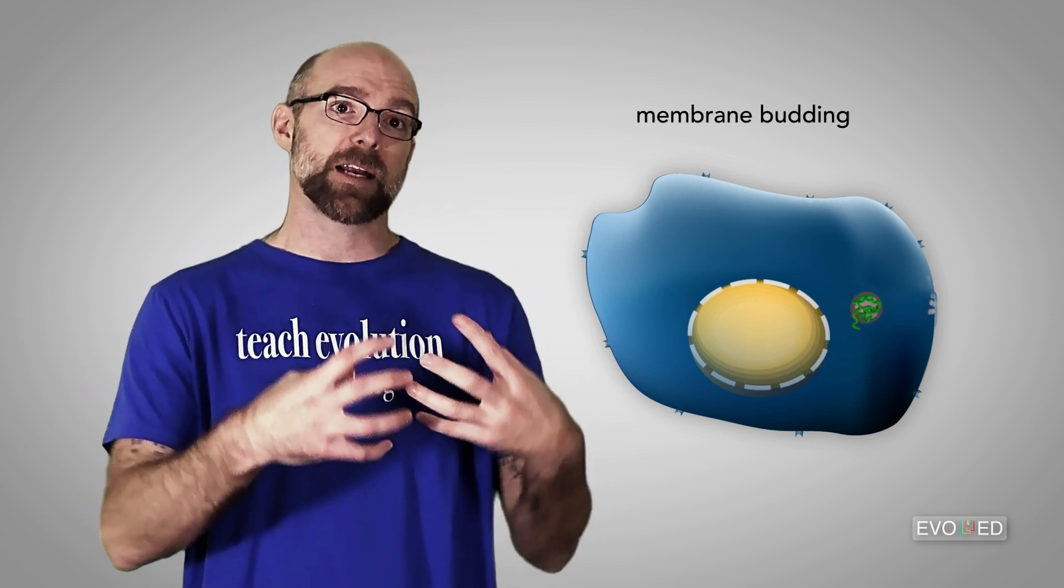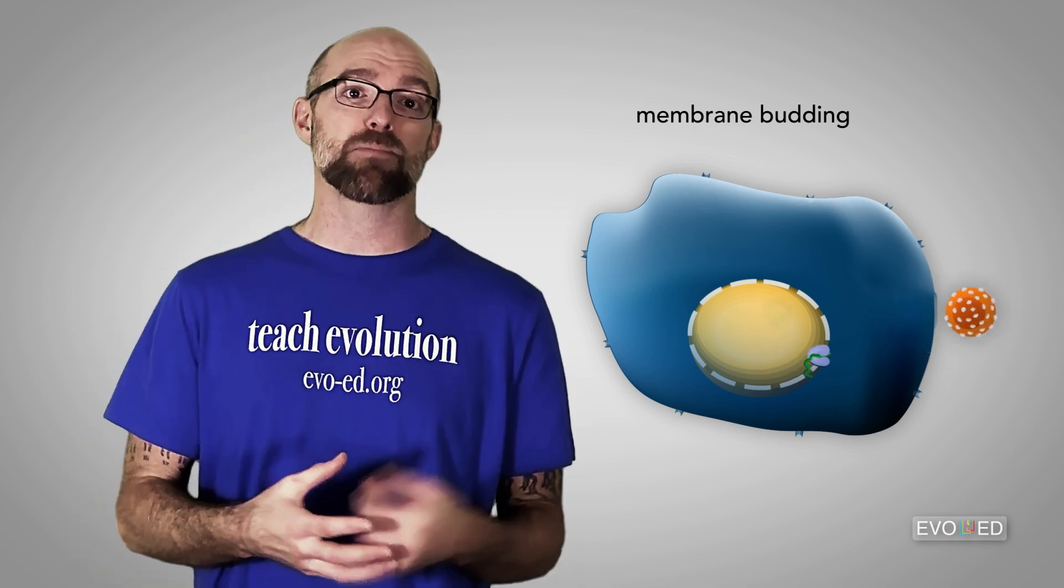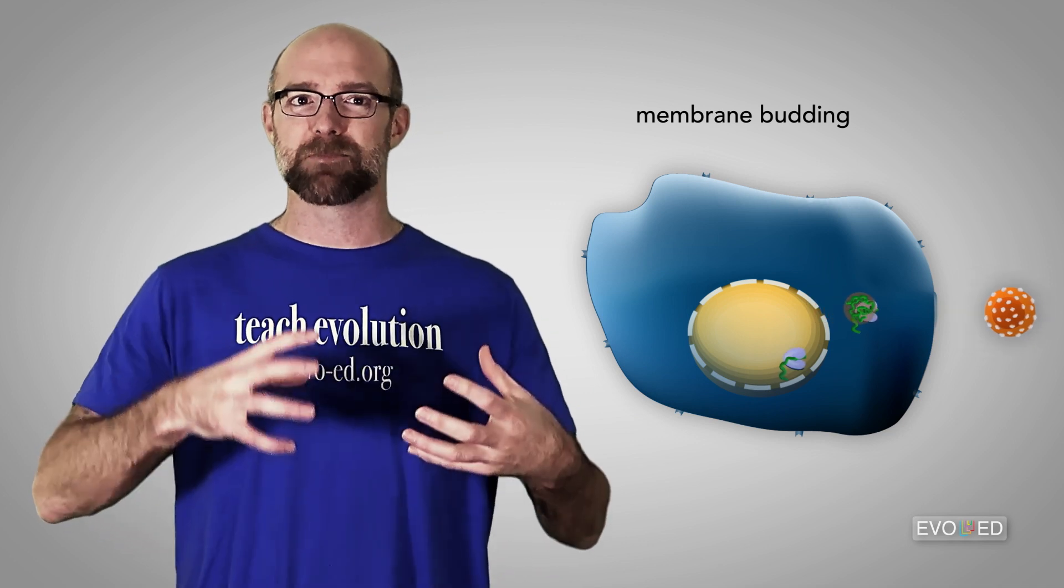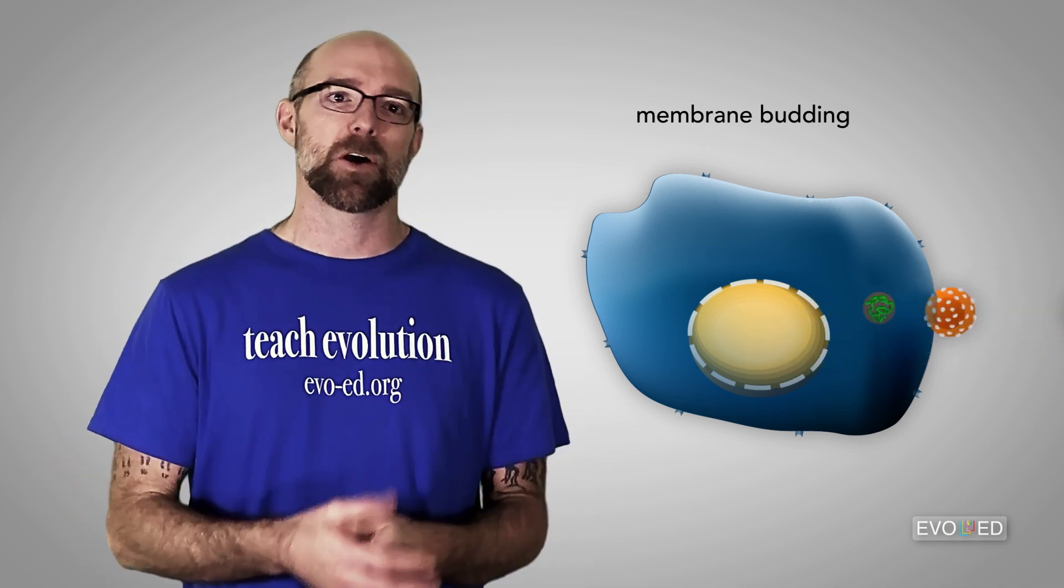As it reaches the membrane, it pushes out and creates a tiny outfolding. This results in a membrane-bound virus particle that's stolen a tiny part of the outer cell membrane from the host cell.